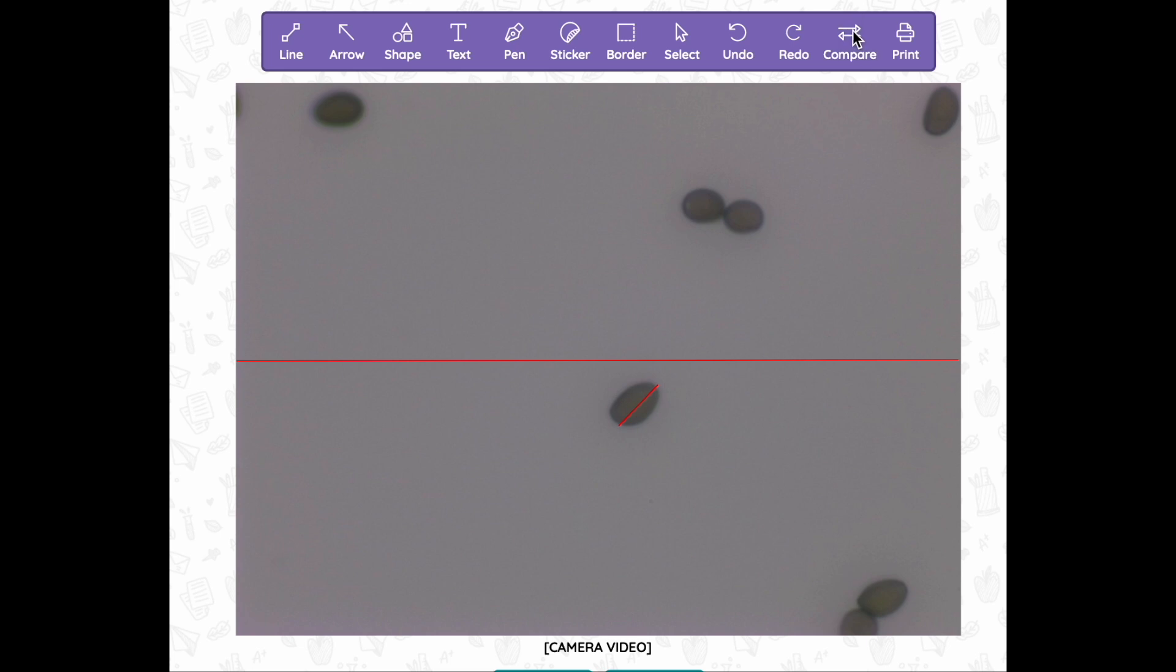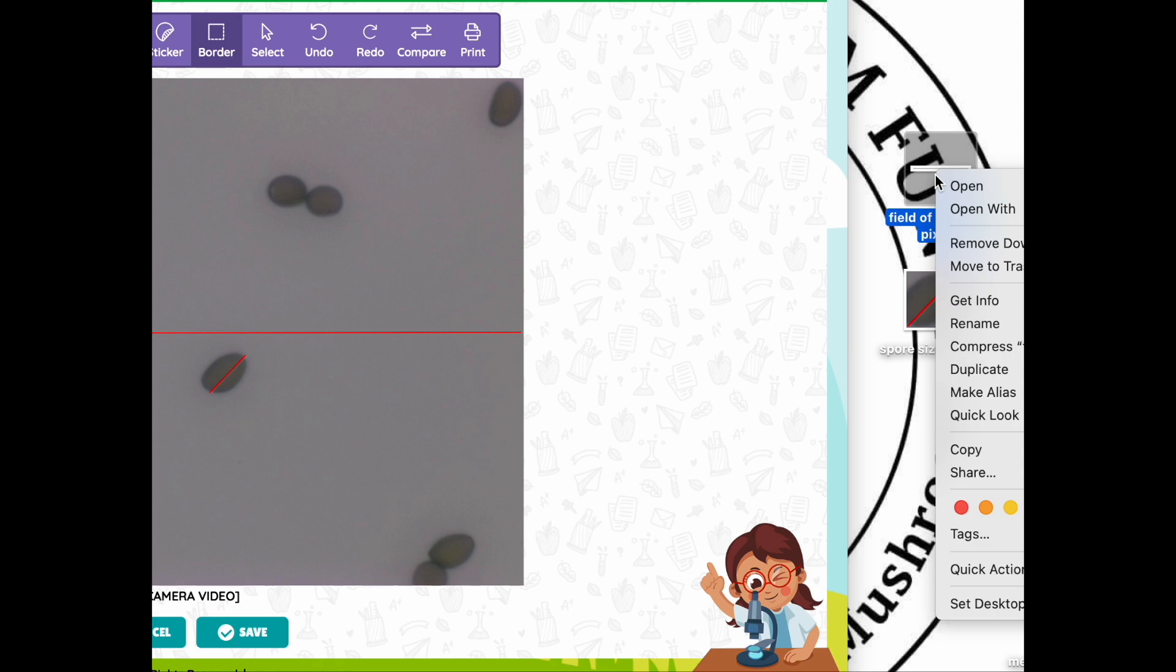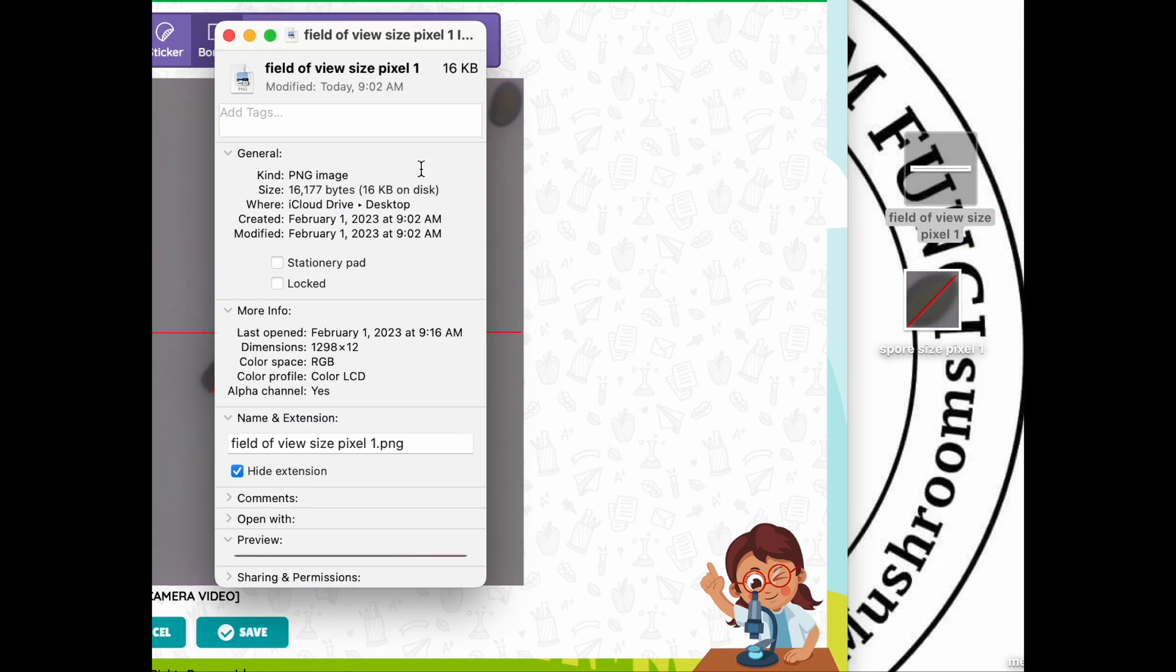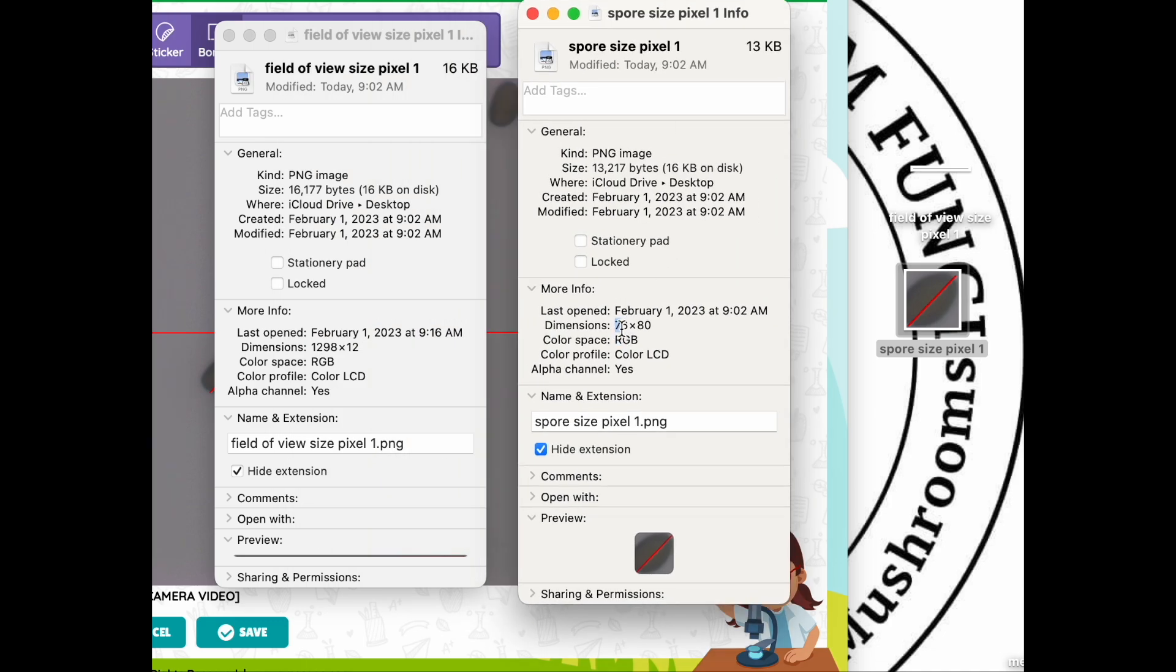And then after that I can use the screenshot feature to calculate the pixels of the line. So now I'm just going across the field of view and I captured a screenshot. And then I'm going to capture a screenshot of the diameter of the spore. So you can see here I got the diameter. Now I am going to pull up the info on my screenshot and then under the size of the pixels you can see it's 1298 for the field of view. And then for the size of the spore it's going to be 76 by 80 pixels, and then we can use that to calculate the size.